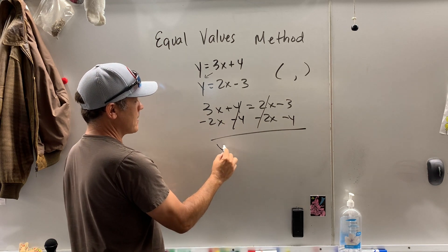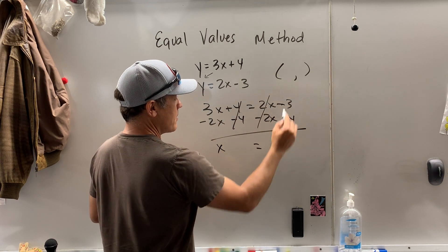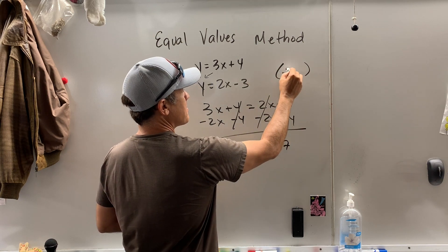So 3x - 2x is x. Negative 3, take away 4 is negative 7. So that's my x value.